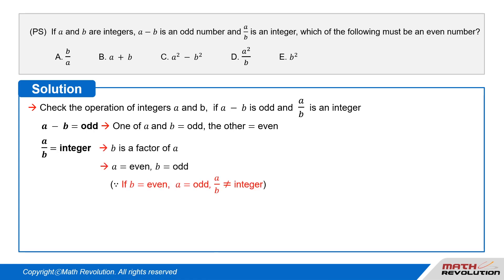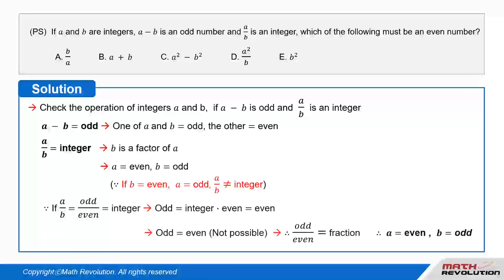If A over B is an integer, it means B is a factor of A, so A has to be even and B is odd. That is so because if B is even and A is odd, A over B cannot be an integer. Because if we take A over B equals odd over even to be an integer, then odd equals integer times even equals even.